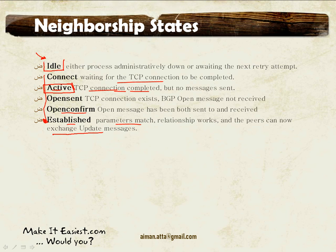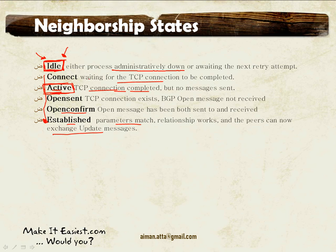If your router is stuck in Active or Idle state, there is a problem. For example, you must specify the IP address of your BGP neighbor. If your router has no route to that neighbor's IP address, the neighborship will remain in Idle state. Another reason for Idle state is if the process or peer is administratively shut down. If you do have a route to reach the neighbor's IP address, the session should progress normally.